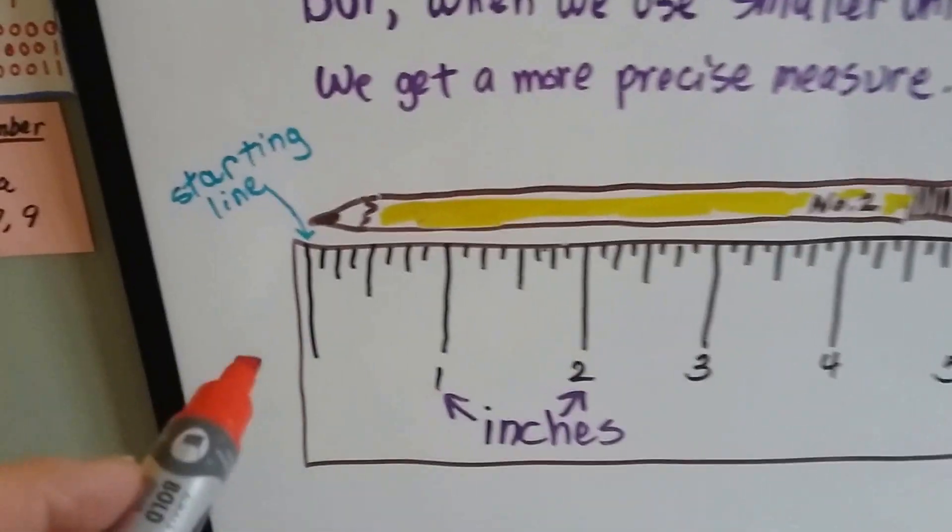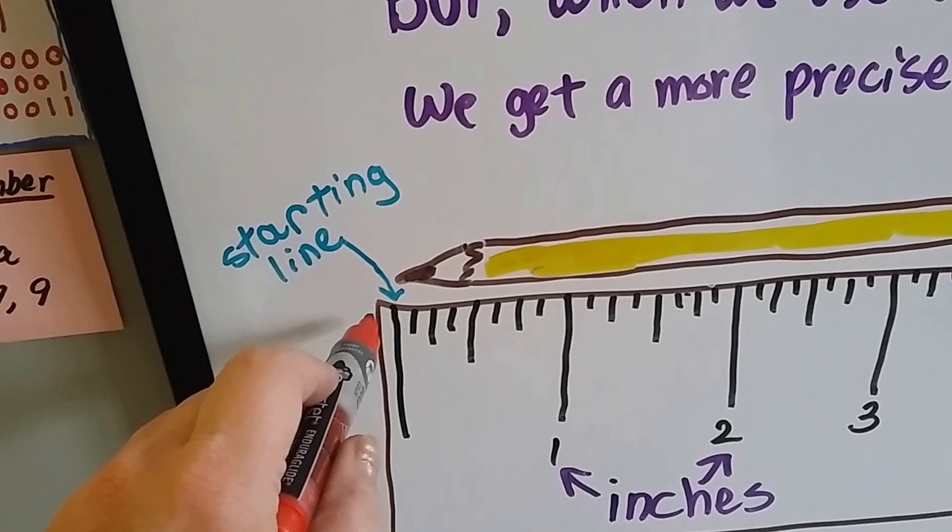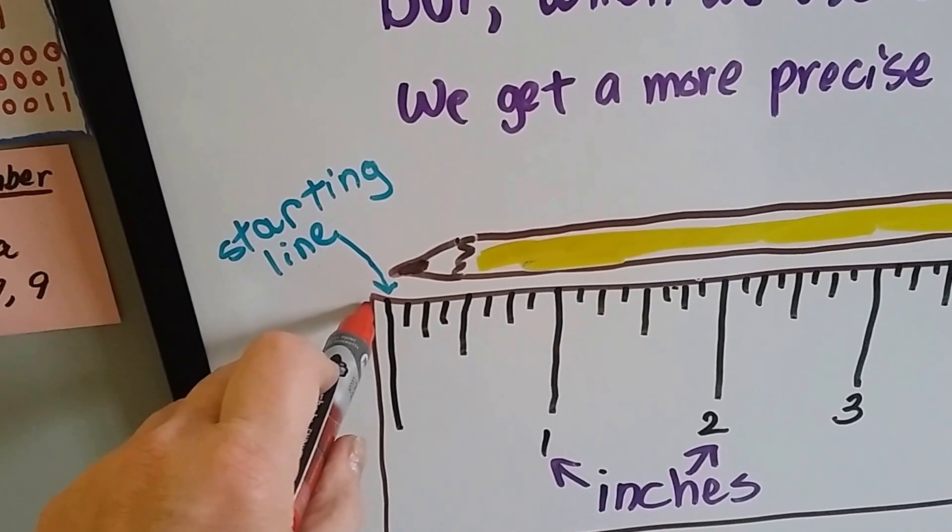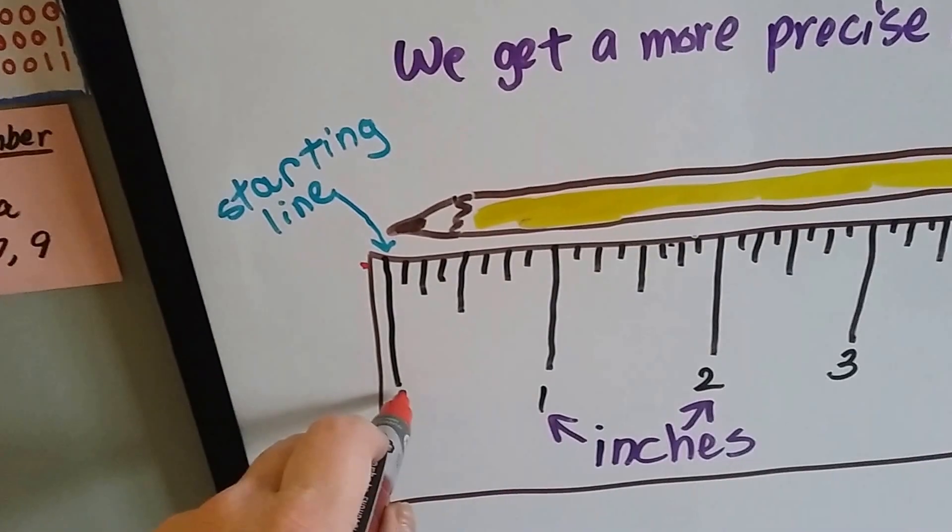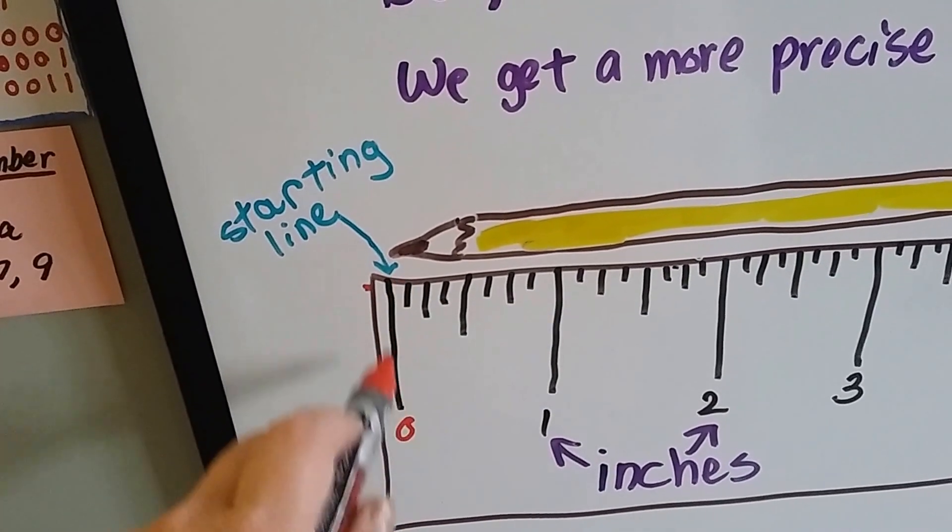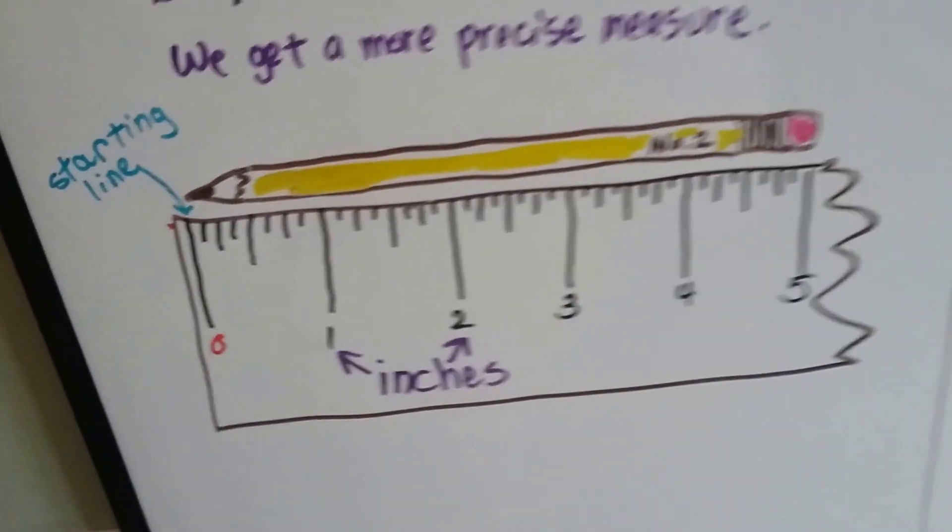Now when you look at a ruler, there's a starting line right here. You're not supposed to start measuring on this edge, which some people do. To get an accurate measurement, you should start on the zero line. That's right here. That's this long line, the first line. That will give you an accurate measurement.